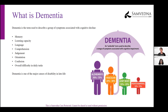Another common question is: what is the difference between dementia and Alzheimer's? Dementia is a broad umbrella term used to describe these groups of symptoms. Alzheimer's is one of the most common types of dementia, with a particular pathology. In fact, almost 50 to 75 percent of dementias are due to Alzheimer's disease.